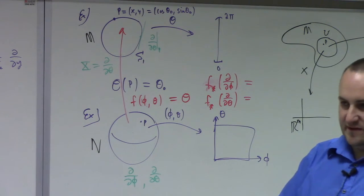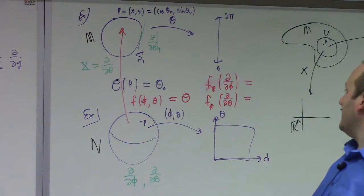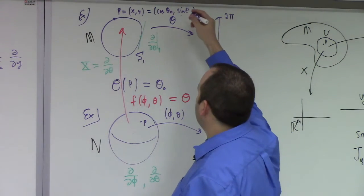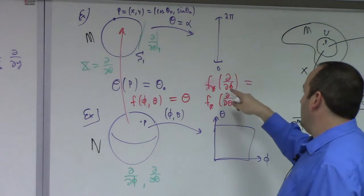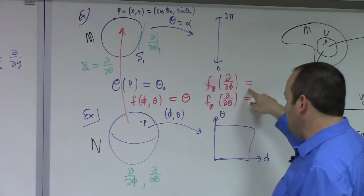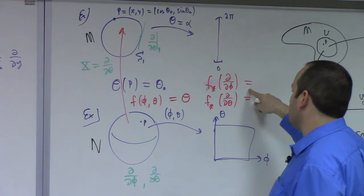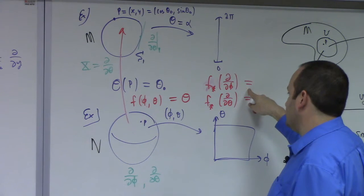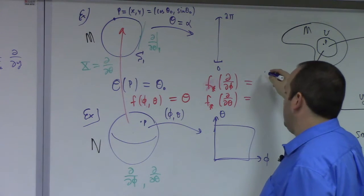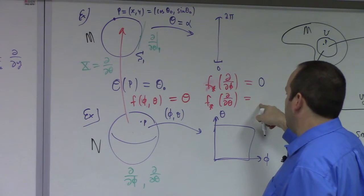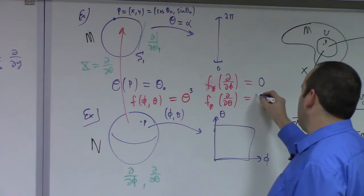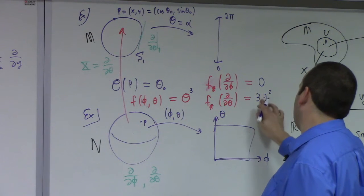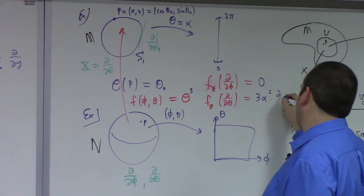It's kind of bad in the sense that we're using theta in two different ways. Maybe I should use alpha as the angle up here — say theta equals alpha, just to give it a different name. To make this more exciting, let's say theta cubed. Then we'd get three theta squared, but it would be alpha squared times partial partial alpha when you work through it.